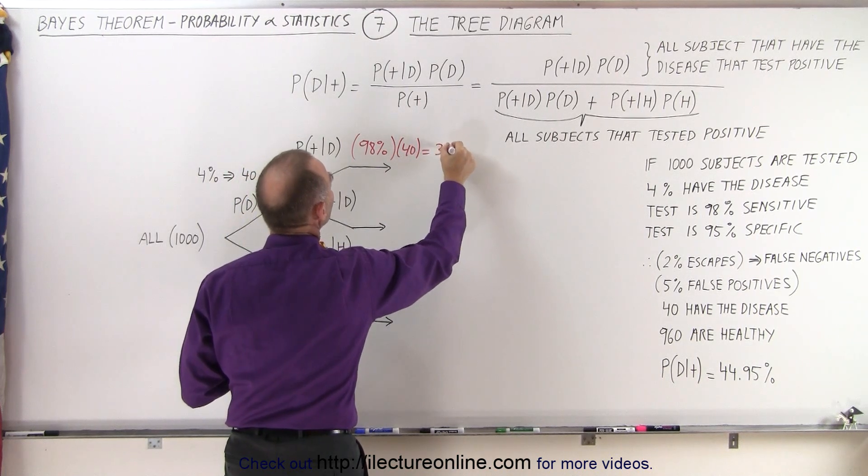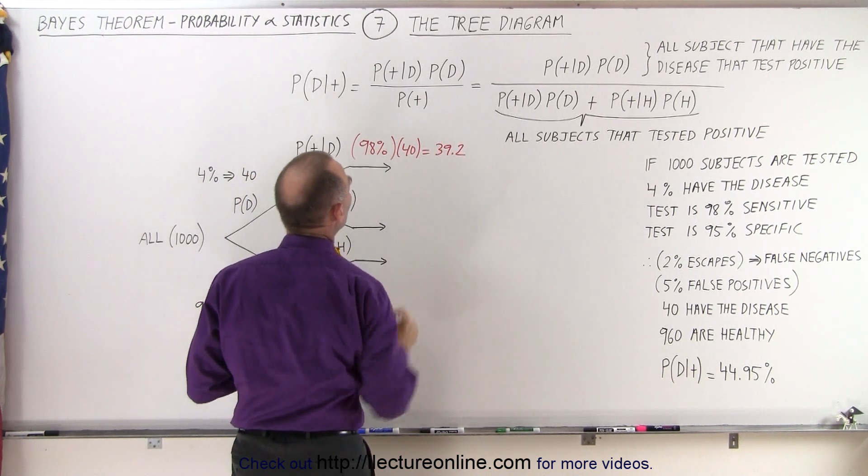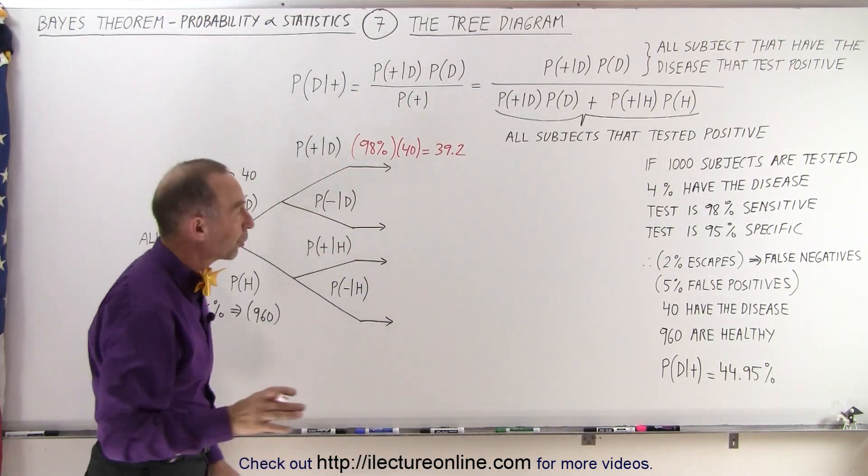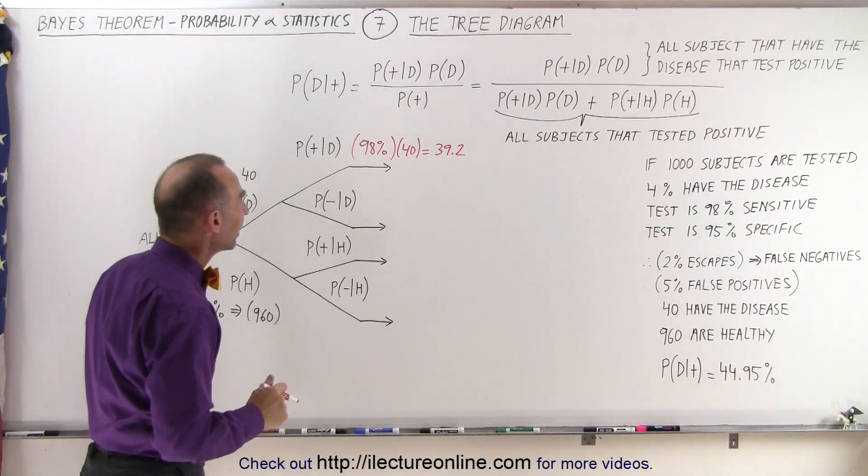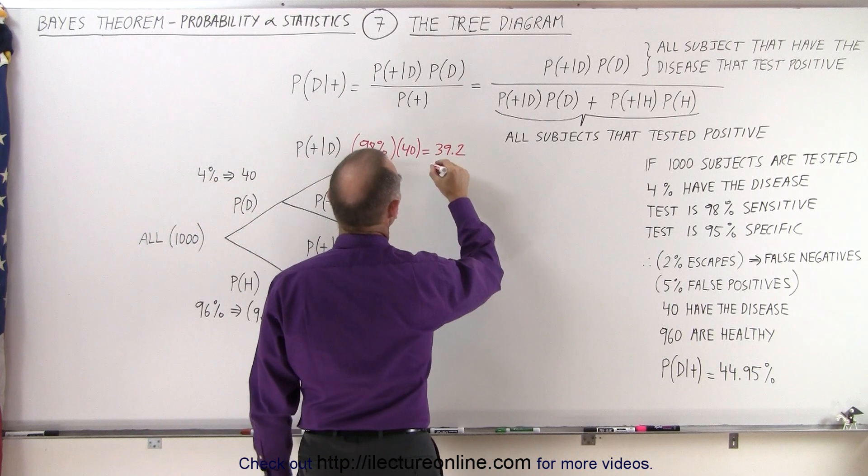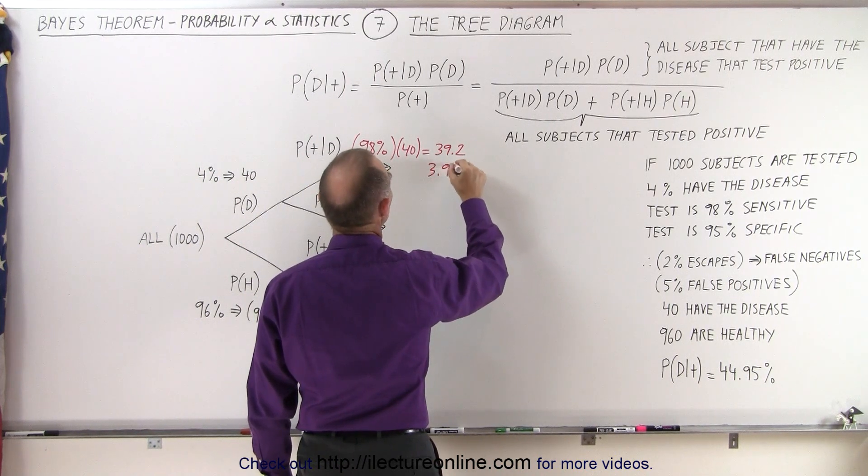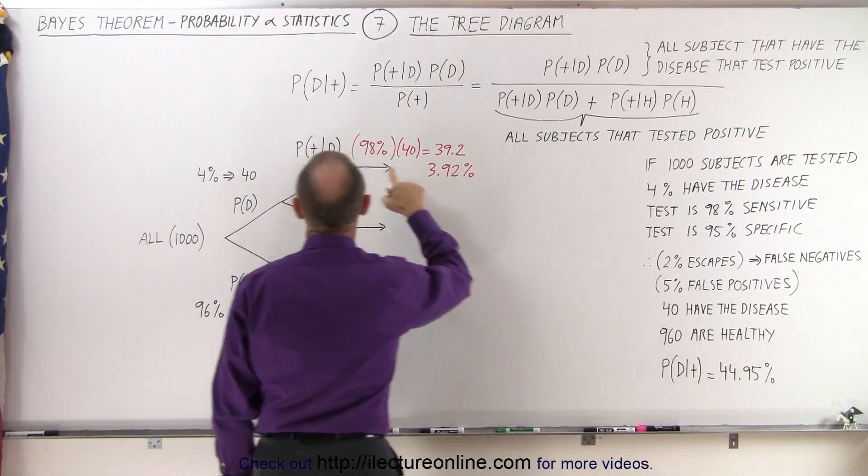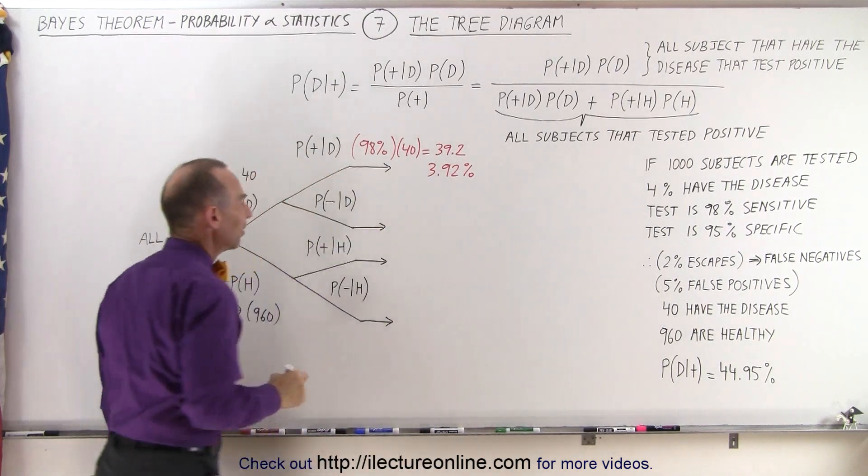Of course, there's no such thing as 39.2 subjects, but that's the number that we got, which equates to 3.92% of all the subjects tested have the disease and test positive.